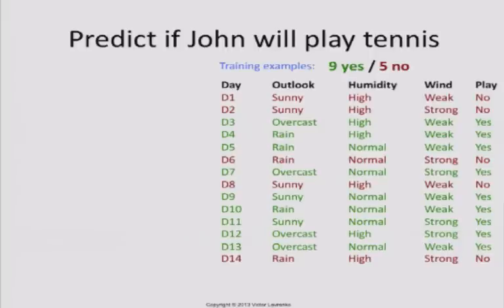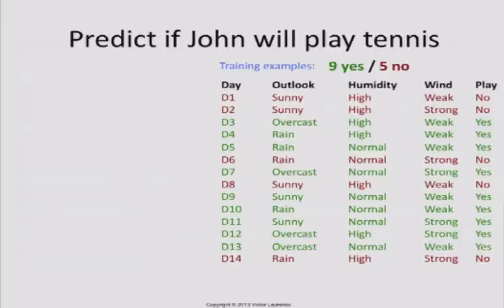The best way to show how decision trees work is to actually start with an example. Suppose I have the following dataset. My task is to predict if a certain guy named John is going to play tennis on a given day. To help with that, I've observed John over a number of days and recorded various things that I think might influence his decision to play tennis: what kind of weather it is (sunny or raining), humidity (high or normal), whether it's windy, and whether John ended up playing that day. That is my training set — the examples I'm going to build a classifier from.